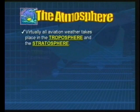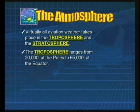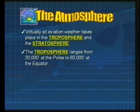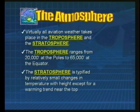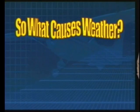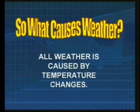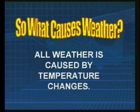The troposphere ranges anywhere from twenty thousand feet at its very top near the north and south poles, to about sixty-five thousand feet near the equator. The stratosphere is typified by relatively small change in temperature with height, except for some warming right near its very top. And here's the big question: what causes weather? The simple answer — all weather is caused by a change in temperature.